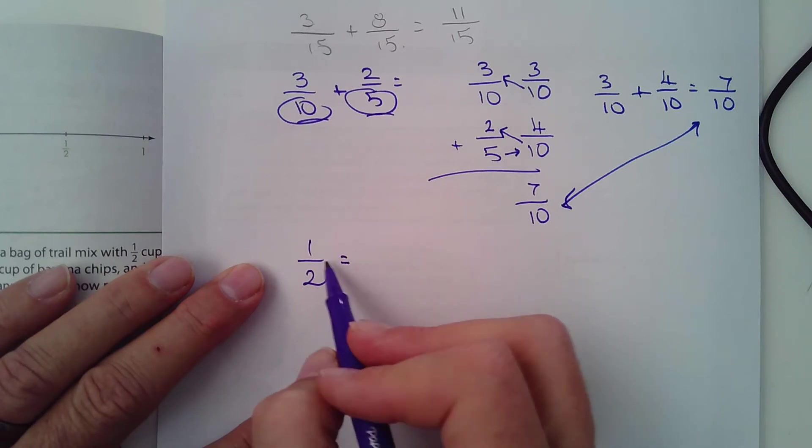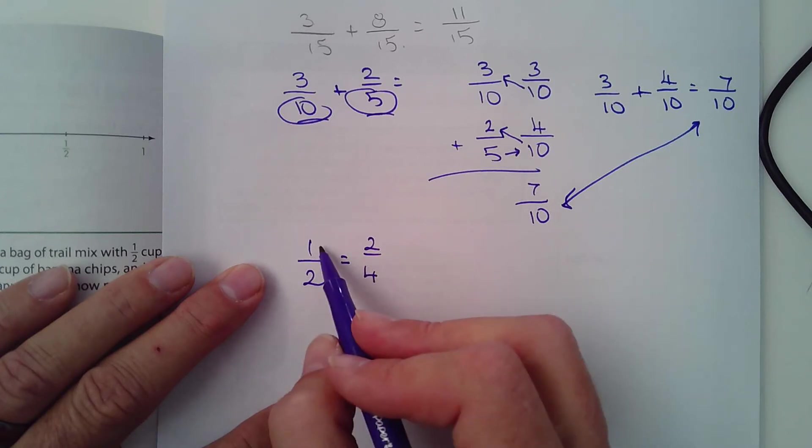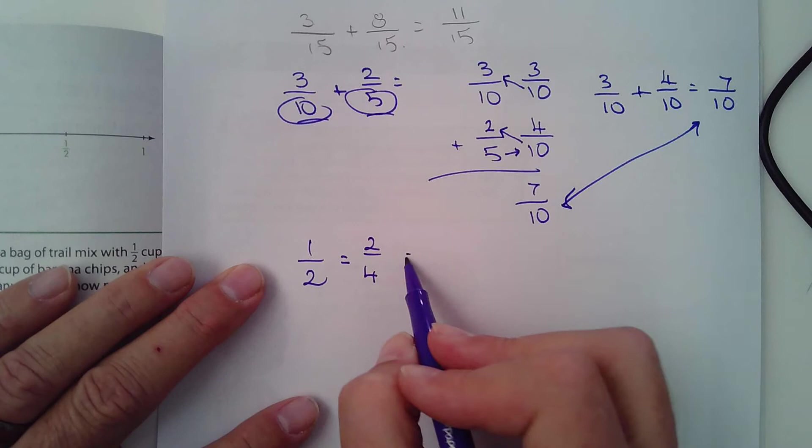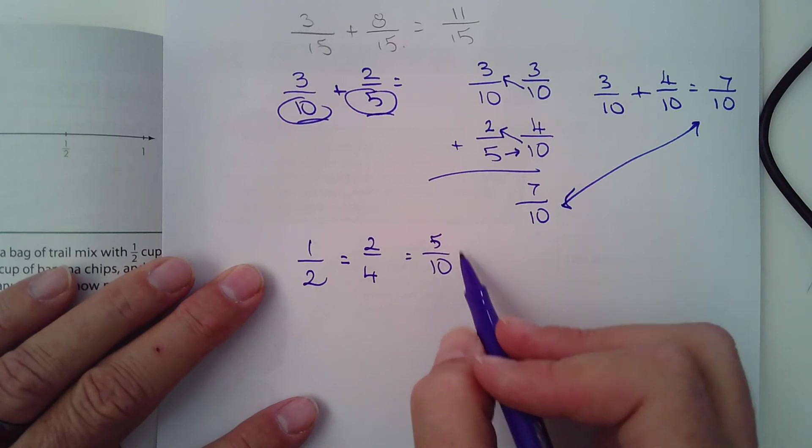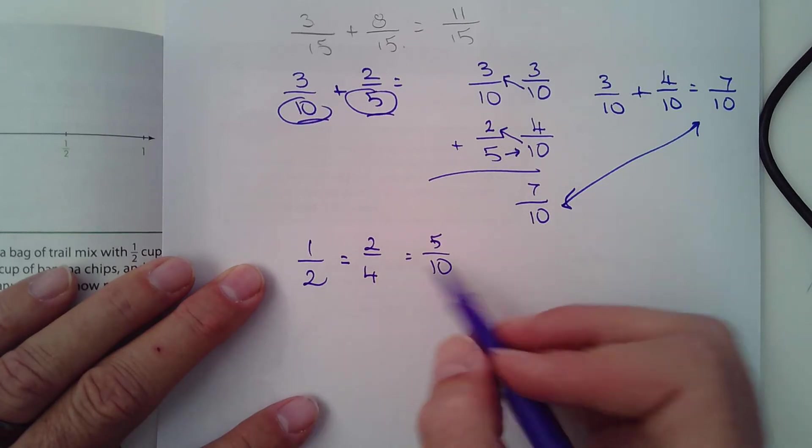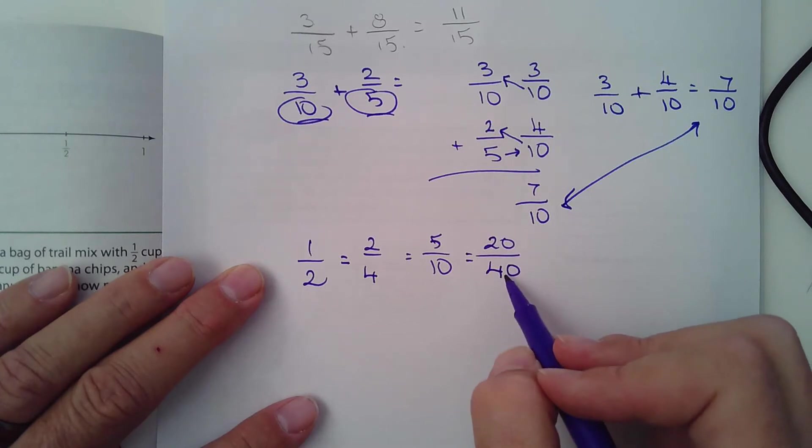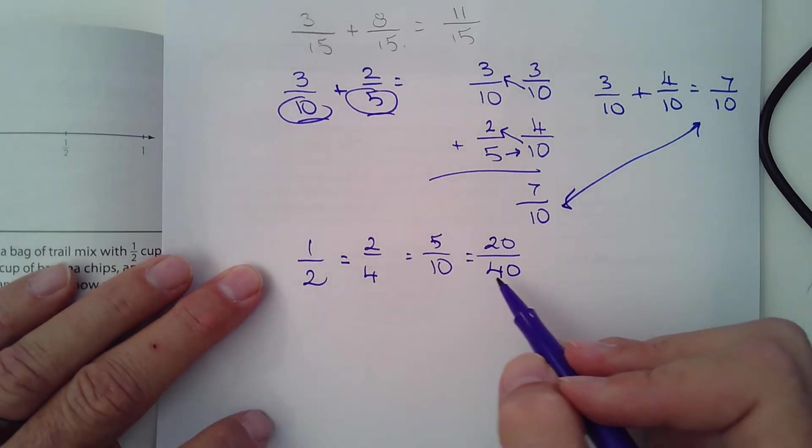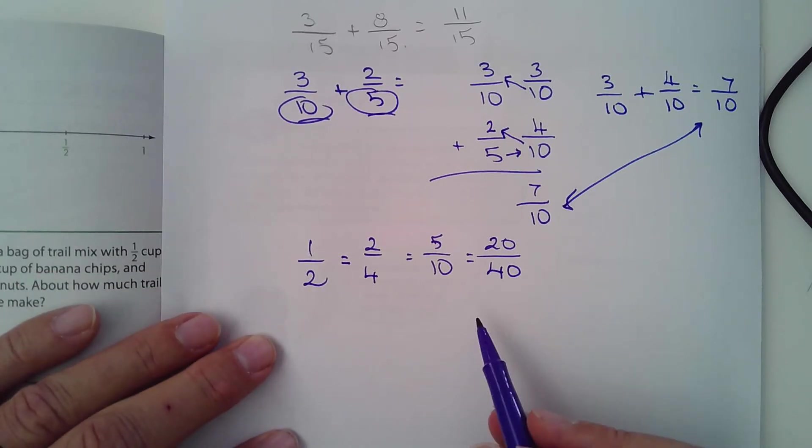They also talk about equivalent fractions. Well, what are equivalent fractions? I talked about that briefly today in today's lesson. So if I wanted to know an equivalent fraction of 1/2, I could say 2/4. Notice I just doubled each one. One doubled is two, two doubled is four. Another equivalent fraction, how about 5/10. Five goes into ten how many times? Twice. Two goes into four how many times? Twice. One goes into two how many times? Twice. What's another equivalent fraction? I don't know, how about 20 over 40. How many times does twenty go into forty? Twice. These are all equivalent fractions.